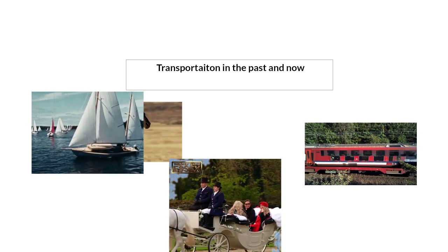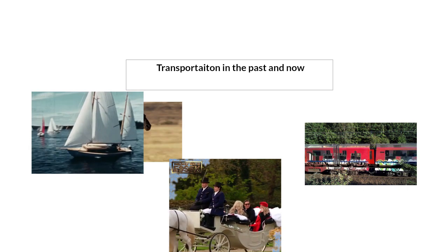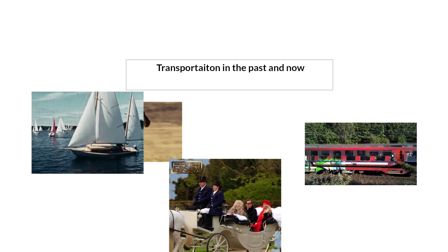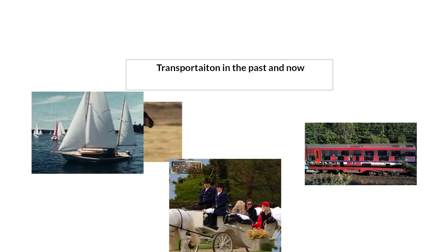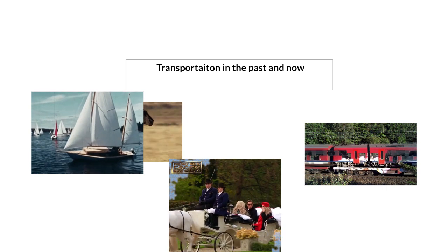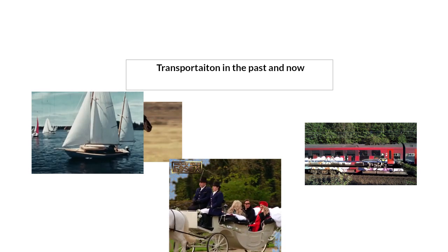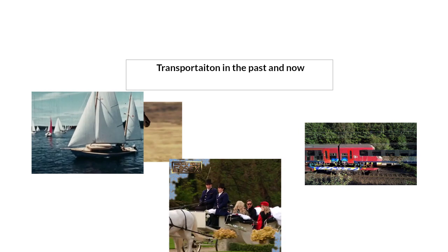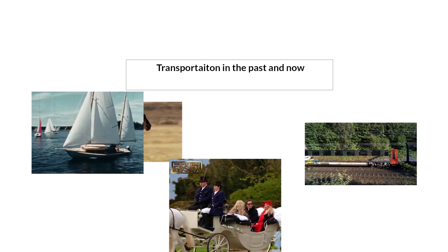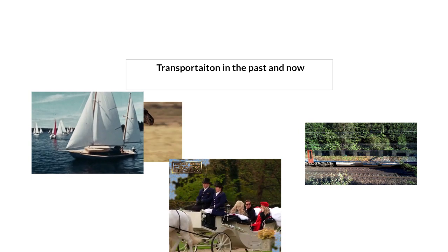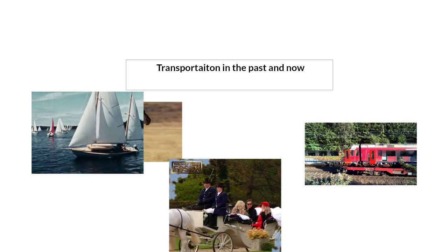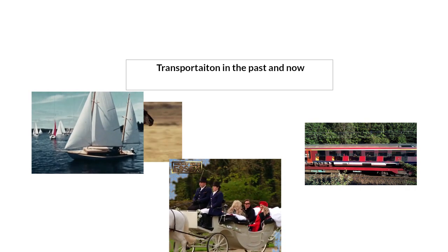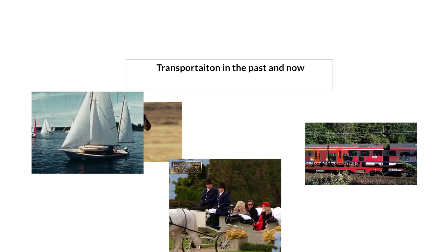Let's discover how people traveled in the past and how we travel now. Long ago, people didn't have cars or buses. They traveled on foot or used animals like horses and camels. Boats were also important for traveling across rivers and seas.